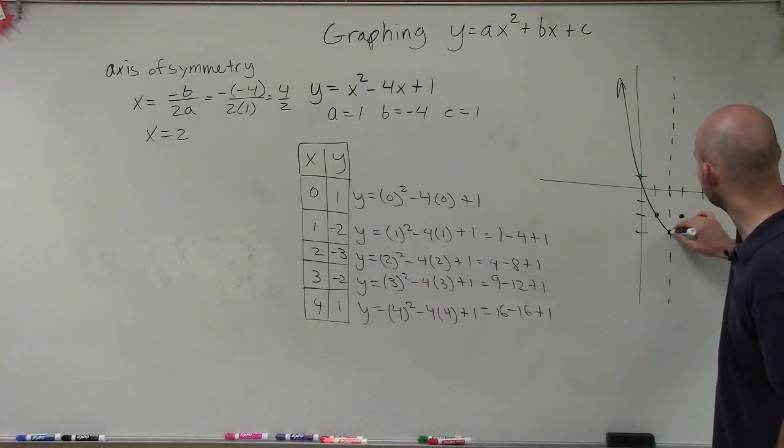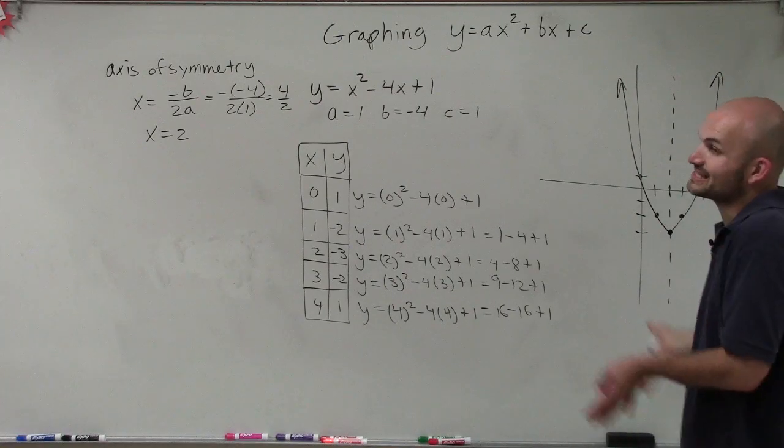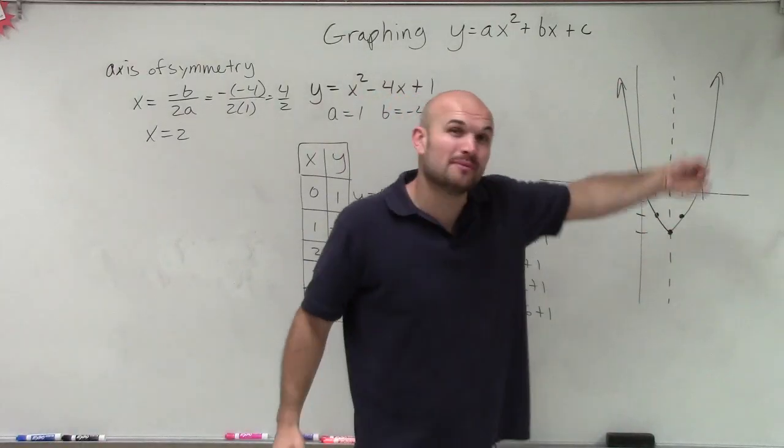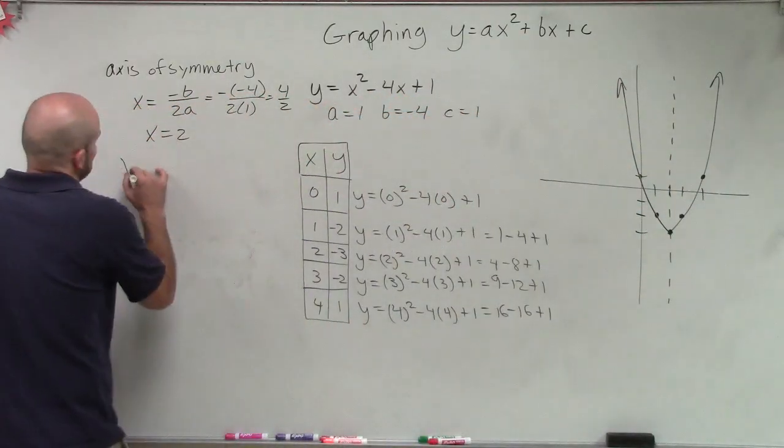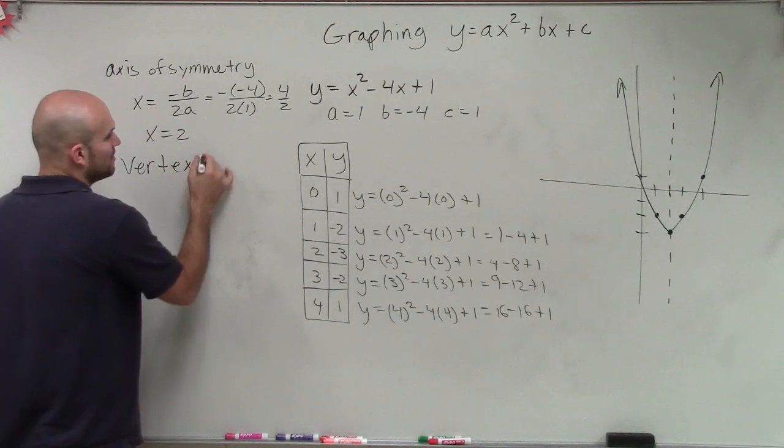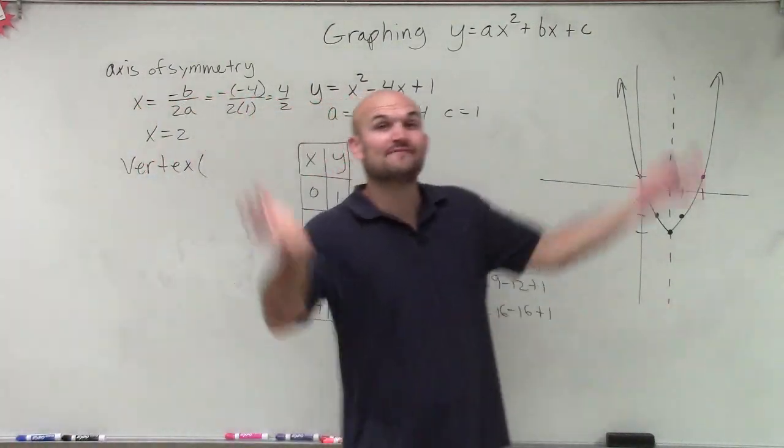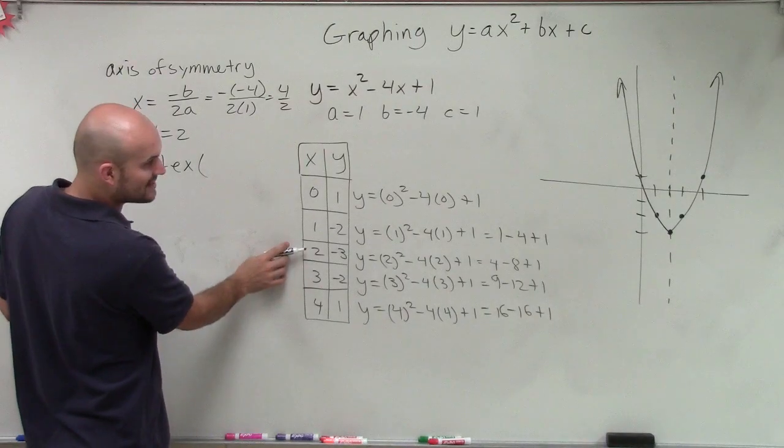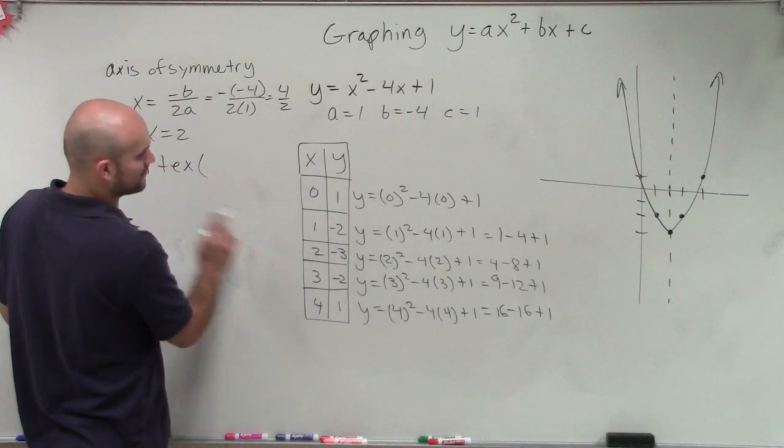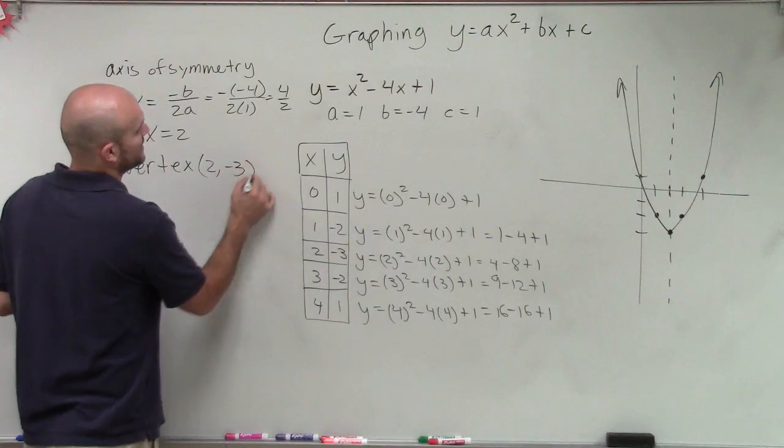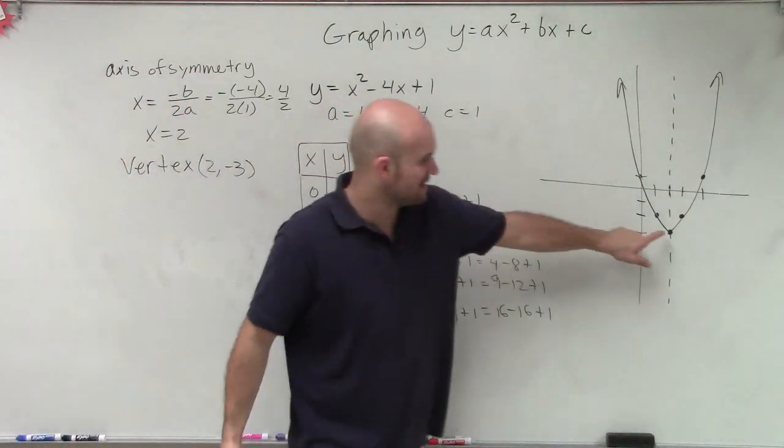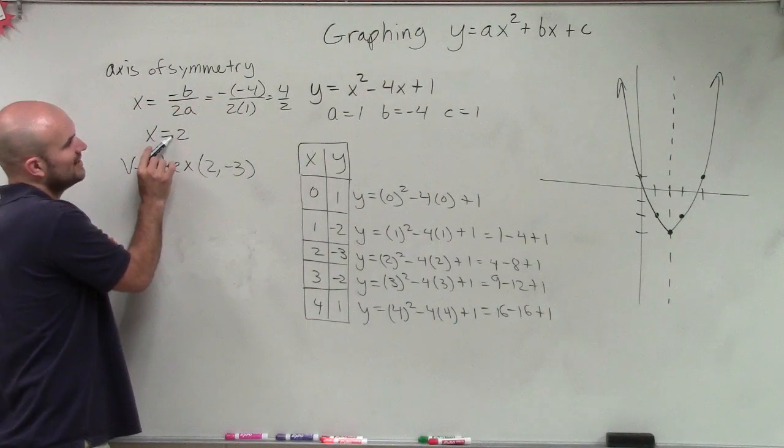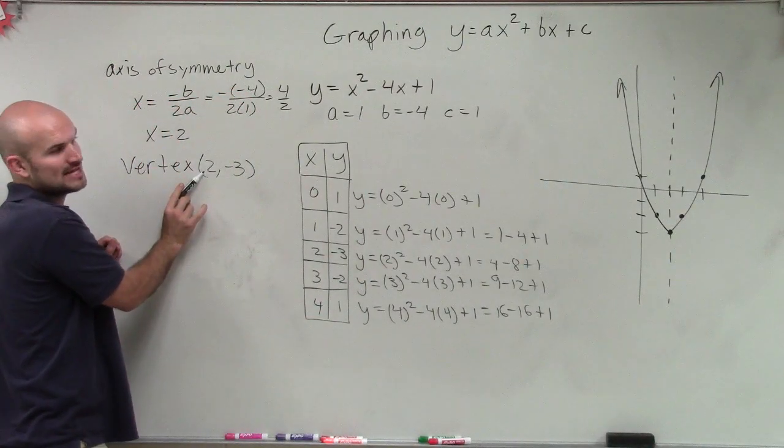Now we're going to connect these points. What you notice is this graph is going to continually keep rising up, but it has a minimum point. Remember that minimum point is our vertex. The vertex is the minimum point because there is no maximum since this graph continues up going to infinity. The vertex is the point at 2 comma negative 3. Notice how the vertex is a point and our axis of symmetry is a line. Also notice that the axis of symmetry is the x-coordinate for our vertex.